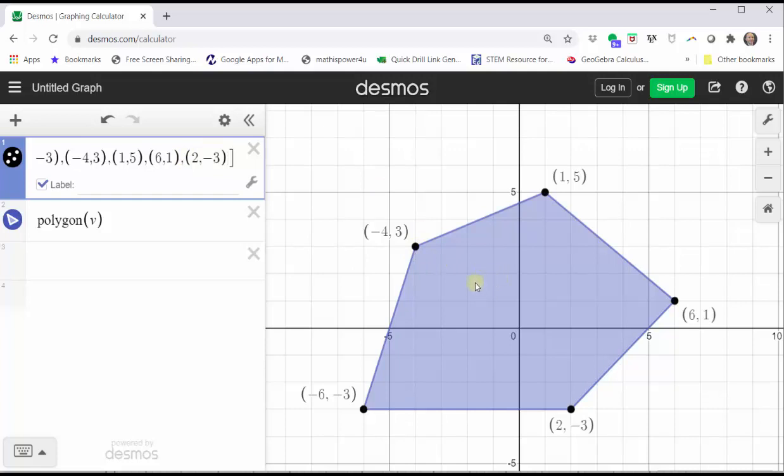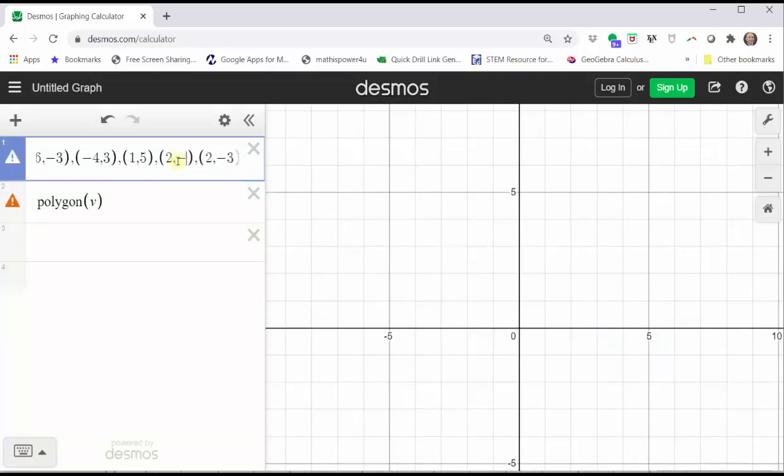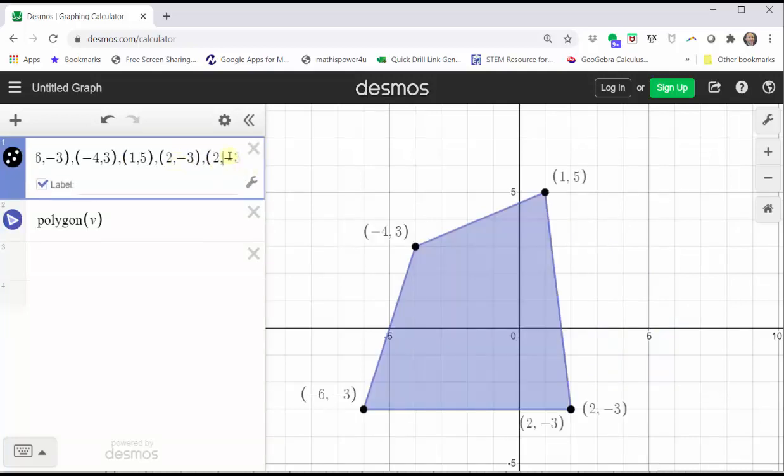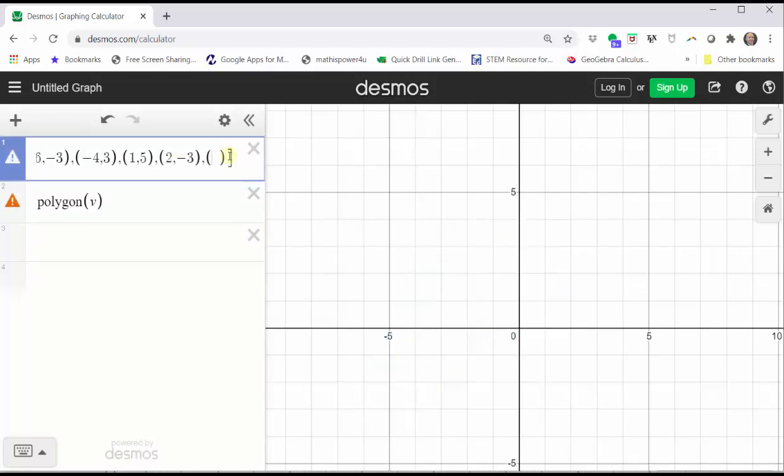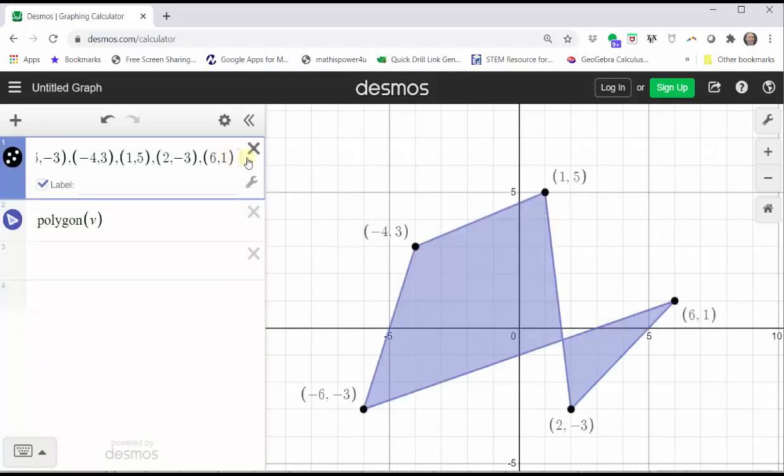And as I mentioned earlier, the order of the vertices does matter. Notice how if I was to switch the order of these last two vertices, for example, I'll change this ordered pair to two comma negative three and the last ordered pair to six comma one. It is going to connect the vertices in the order given.